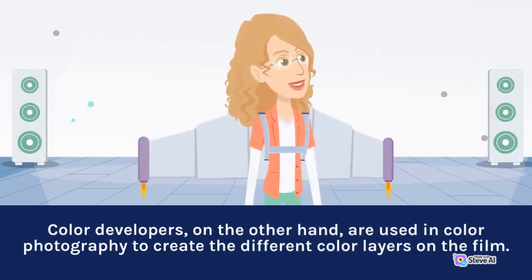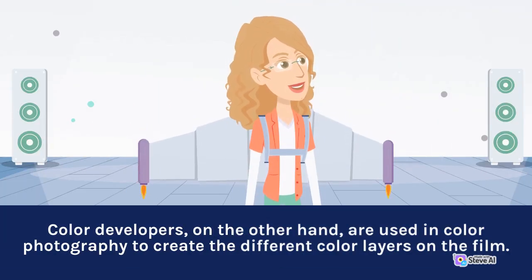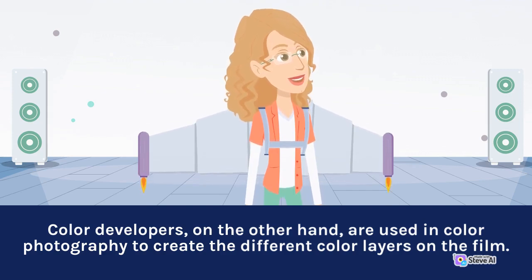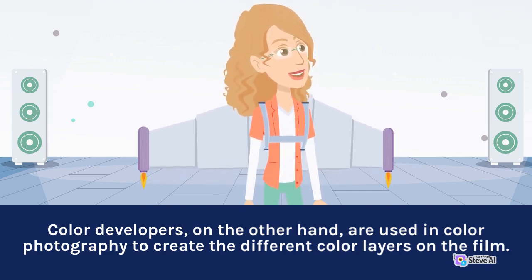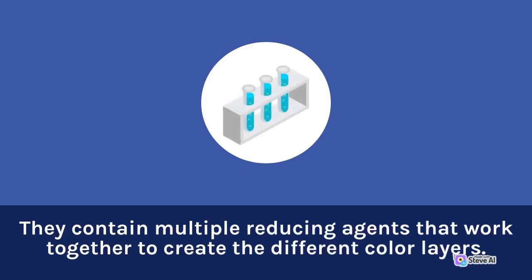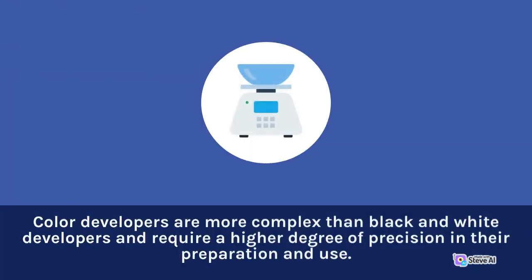Color developers, on the other hand, are used in color photography to create the different color layers on the film. They contain multiple reducing agents that work together to create the different color layers. Color developers are more complex than black and white developers and require a higher degree of precision in their preparation and use.